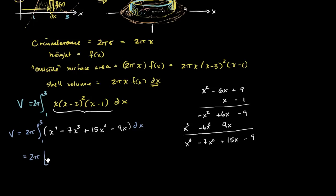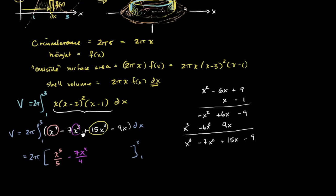Now let's take the antiderivative. This is going to be equal to 2π times the antiderivative evaluated at 3 minus at 1. The antiderivative of x⁴ is x⁵/5. The antiderivative of x³ is x⁴/4, multiplied by -7, giving -7x⁴/4. The antiderivative of 15x² is 15 × x³/3 = 5x³. And the antiderivative of -9x is -9x²/2.